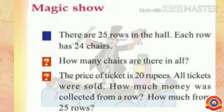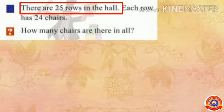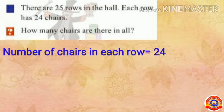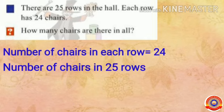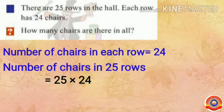There are 25 rows in the hall. Each row has 24 chairs. How many chairs are there in the hall? There are 25 rows and 24 chairs in each row. To find out the total number of chairs in 25 rows, we have to multiply the total number of rows with the number of chairs in each row — that means multiply 25 and 24.